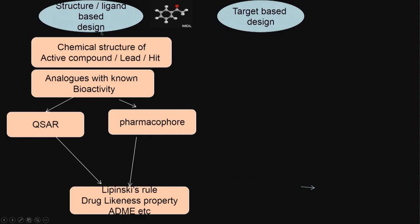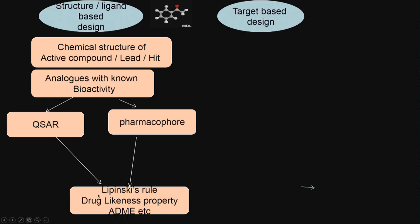In the ligand-based approach, I know some structures — the chemical structures of some active compounds, which we call leads or hits — and then I design and synthesize new analogs with known bioactivity. Then I do something called quantitative structure activity relationship (QSAR), identifying what structural features are required for activity, or I do pharmacophore modeling to identify what functional groups are responsible for certain activities. I also use Lipinski's rule, ADME properties to shortlist molecules.